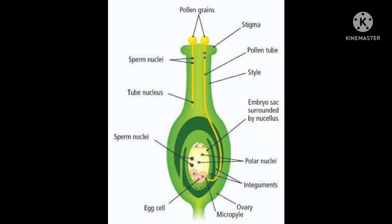The pollen tube has to reach the ovary, and once it reaches there, it gets fused. When that fusion happens, that process is called fertilization. After fertilization, fruit formation begins.